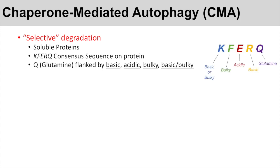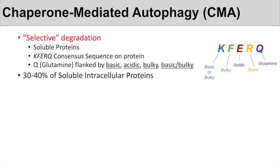Here is a color coding schematic that hopefully better simplifies the KFERQ consensus sequence. If a chaperone in CMA detects this particular sequence of amino acids in a soluble protein, it can target that protein for degradation. About 30 to 40 percent of soluble intracellular proteins contain this KFERQ consensus sequence, so CMA can target about 30 to 40 percent of soluble intracellular proteins for degradation.